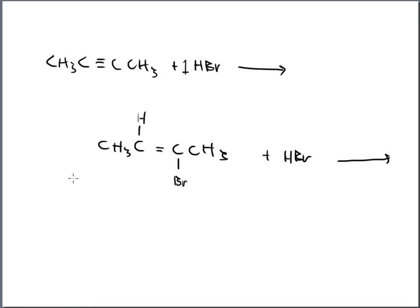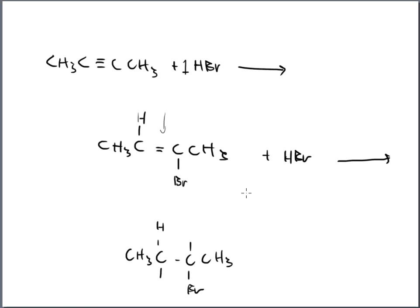What if we added another HBr? This is now an alkene and all the alkene reactions apply. We can add another HBr: the same process happens, a bond breaks taking us to an alkane, two sides of attachment open up. H adds to the carbon with the most H's — the left-hand carbon at this point — and Br adds to the other.